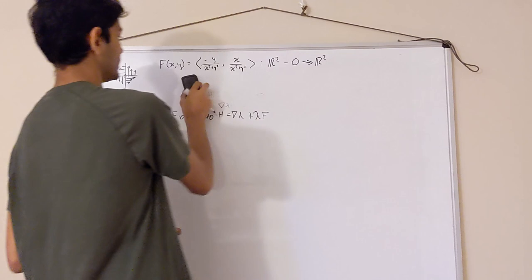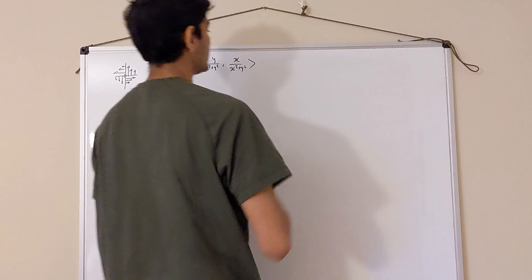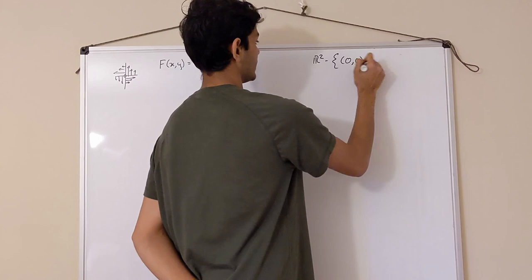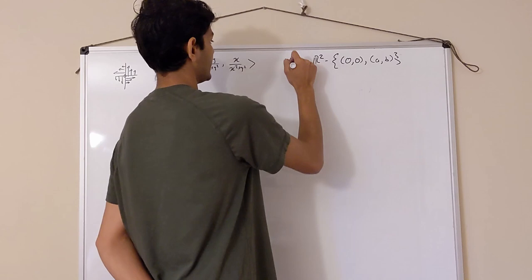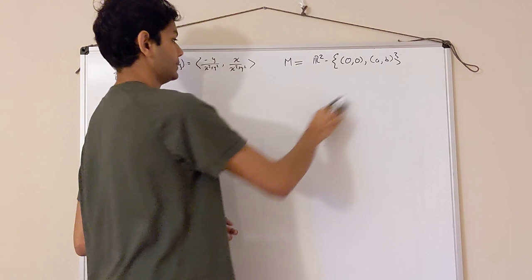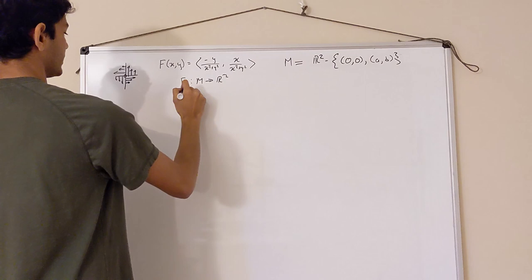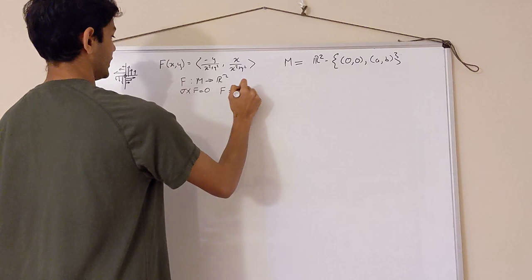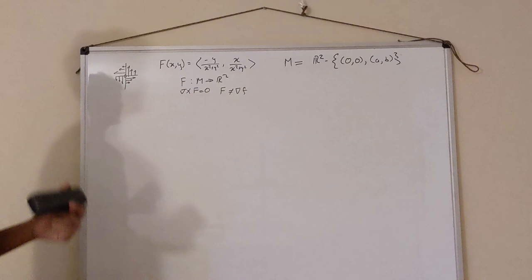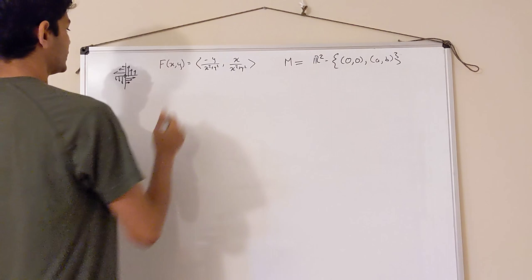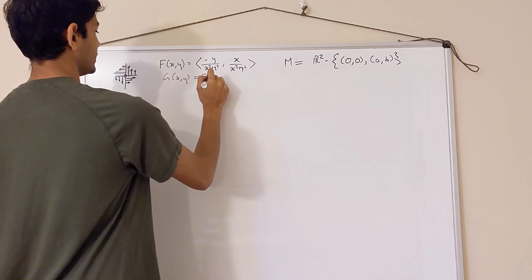Now we ask a similar problem but change our space: instead of R² minus just the origin, we look at M = R² minus two points — the origin and the point (a,b). M is short for manifold; we'll cover that concept later. We can see that F is still a vector field from M to R², and curl F = 0 everywhere on M, but F is not the gradient of any function. However, we can find another vector field with this same property that is distinct from F, namely G(x,y) = F(x−a, y−b).